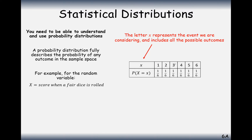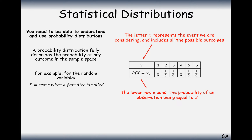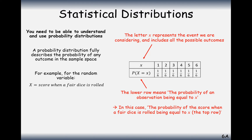So the outcomes are 1, 2, 3, 4, 5, and 6, each with their associated probabilities. On the bottom row, the probability of an observation equals the number that appears above it. The probability of rolling a one is one sixth, the probability of rolling a two is one sixth, and so on. The probability of the score when a fair dice is rolled is equal to one sixth for each outcome in the top row.